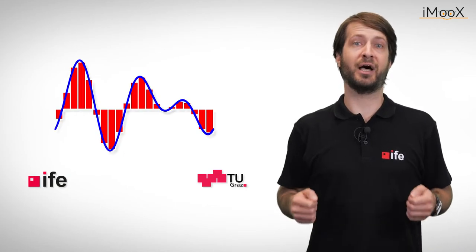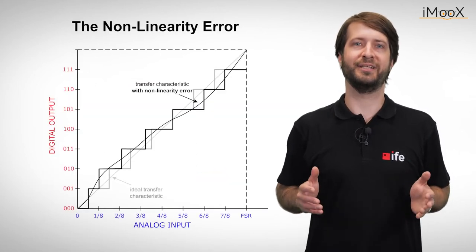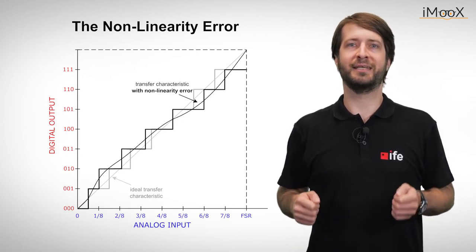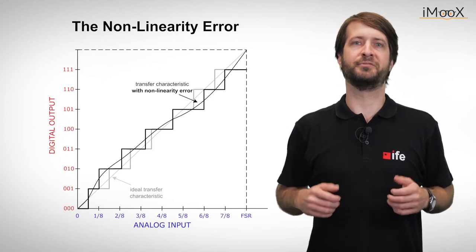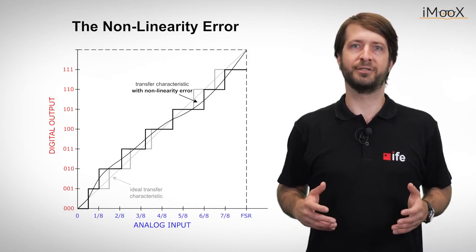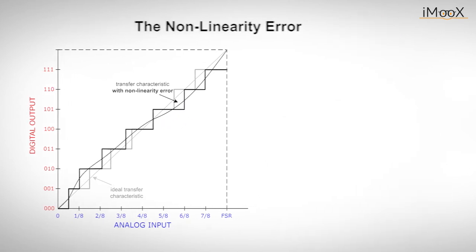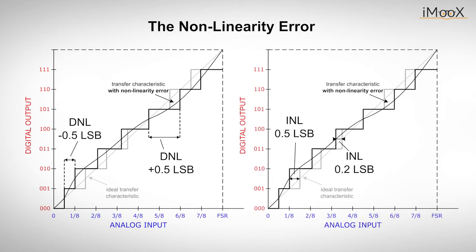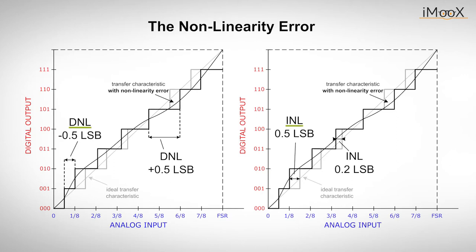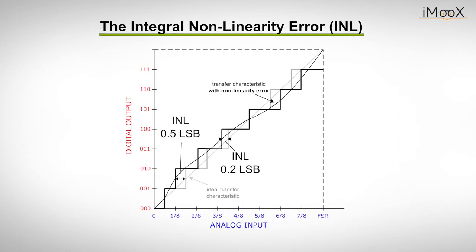However, there are also types of errors that cannot be easily eliminated. These include so-called non-linearity errors. If offset and gain error are compensated so that the end points of the real and the ideal characteristic are the same, a non-linearity error can be recognized by a curvature of the transfer curve. There are two kinds of non-linearity errors, the differential and the integral non-linearity, DNL or INL in short. It is important to distinguish them, because their effects are different depending on the application.